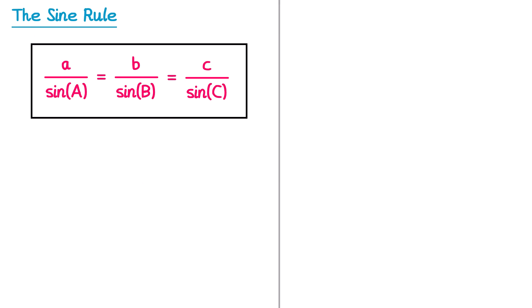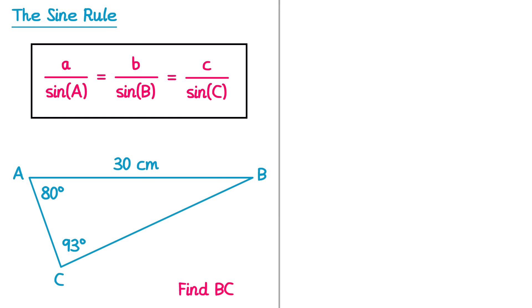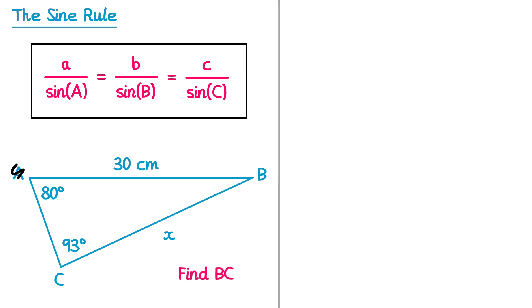Now let's try a second example where we find the length of BC. I'll label BC as X. Note that the corners of this triangle are already labelled A, B and C — which is common in exam questions. However, this can cause confusion since we'll be using those letters for our own labelling, so you may want to cover or scribble out those corner labels temporarily to avoid confusion.